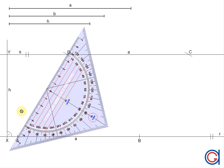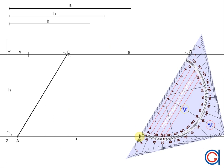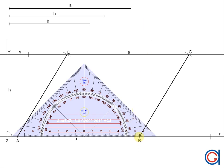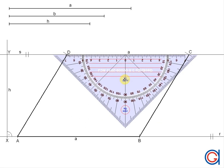And now finally with a thicker line we will join the points A to D, B to C, and B to A. And finally to complete our rhomboid we will join the points C to D. So here we have our rhomboid given its two sides and its height H.